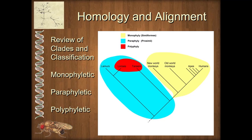First, let's review topics from our last discussion. When classifying organisms, we want to make sure we do it by clades. A clade is a group of descendants that come from a common ancestor without leaving any of the descendants out — that is a valid clade. The only clades that are valid are monophyletic. Notice in the yellow group here, we have a common ancestor and haven't left out any descendants.